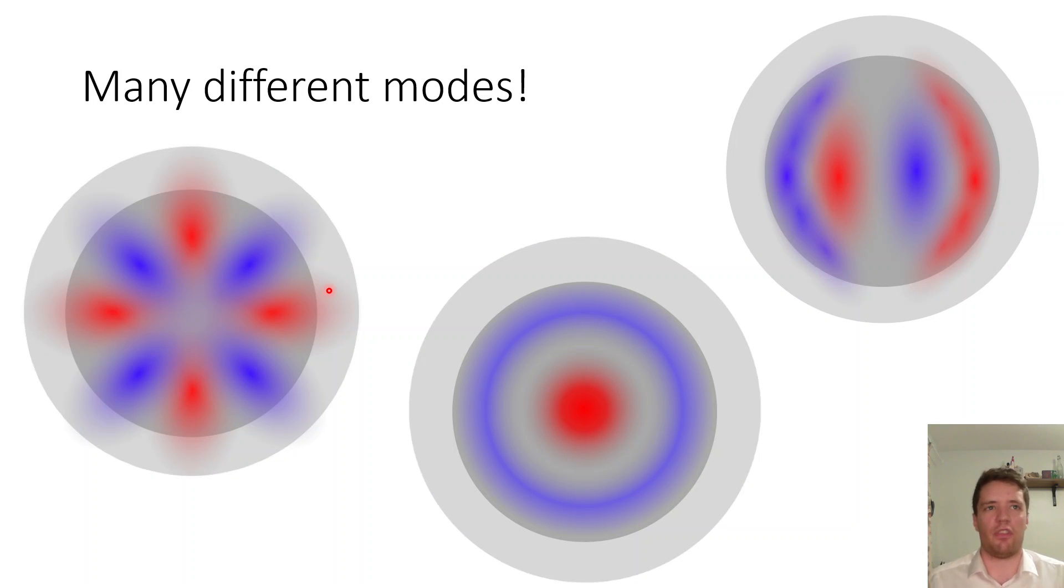Now I've only showed really cartoonish pictures of this but of course you can get very many different types of modes depending on the exact fiber geometry and the refractive index profile so that's something you can either do analytically or numerically depending on the exact situation.